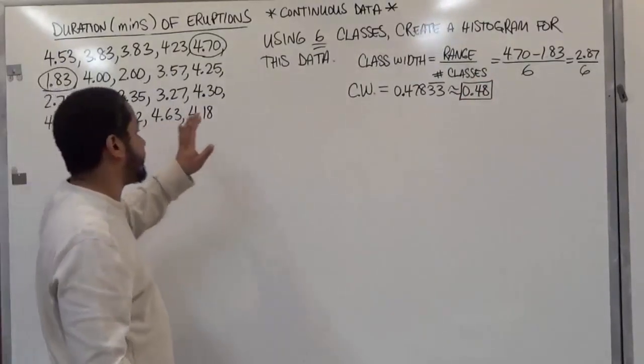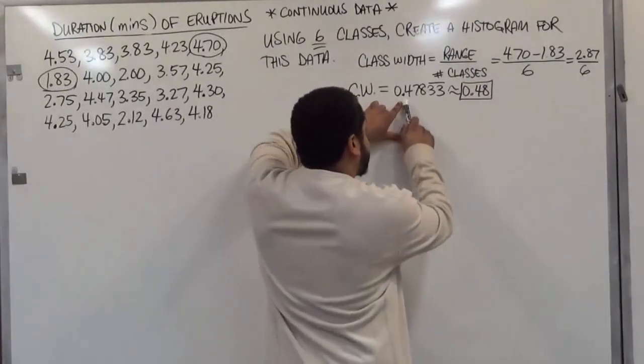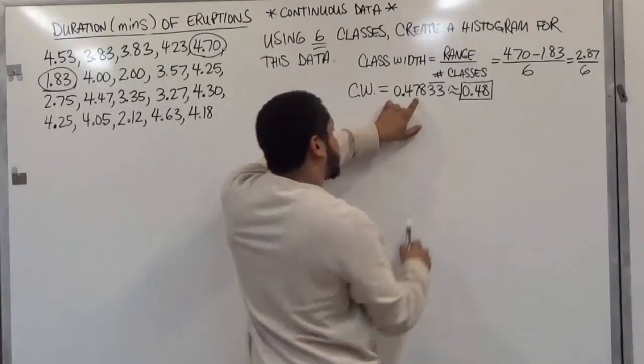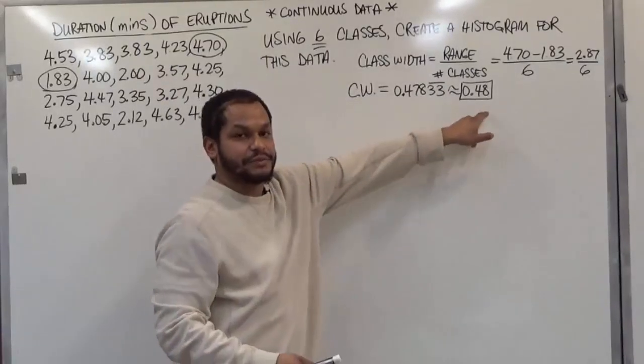So in this case, the difference of the 2 divided by 6 gives us this. Since we have this to the 100th position, we're going to round this number to the 100th position as well.